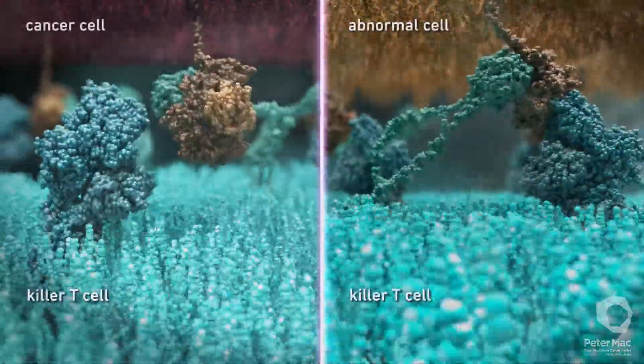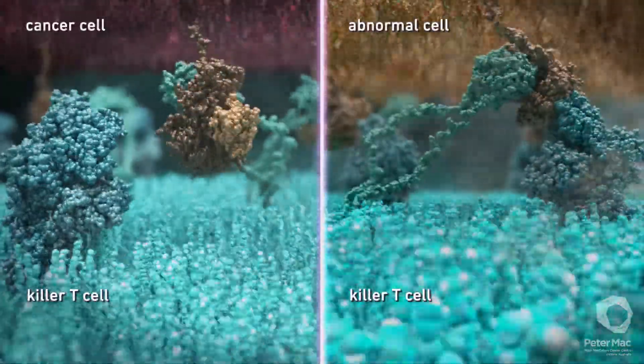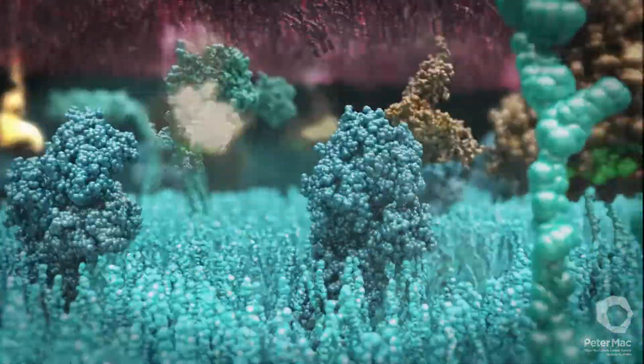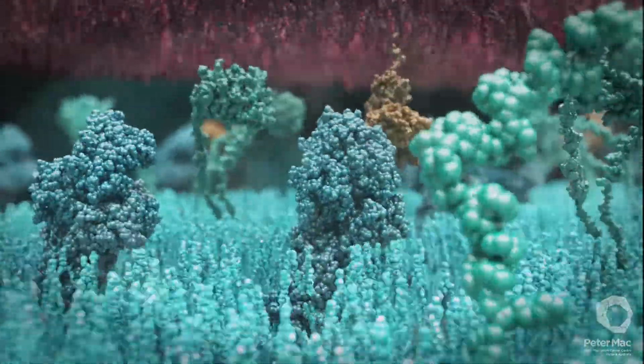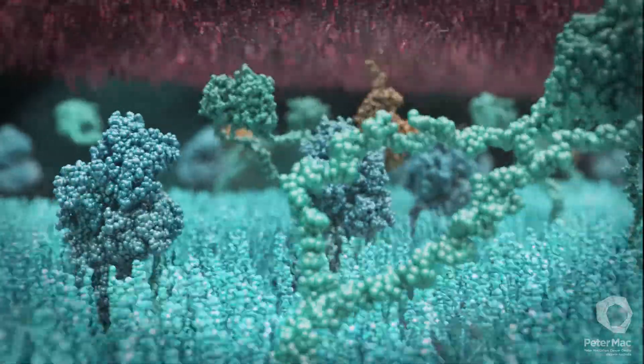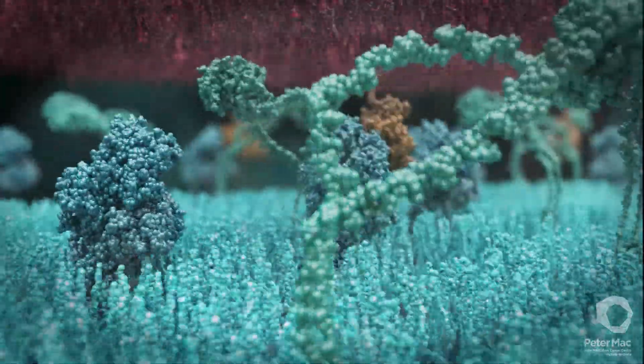On the left we see the surface of a cancer cell. Cancer cells can avoid recognition by reducing the number of MHC1 molecules on their surface that would normally alert killer T-cells to them. This means that detection and killing of cancer cells by killer T-cells is impaired.